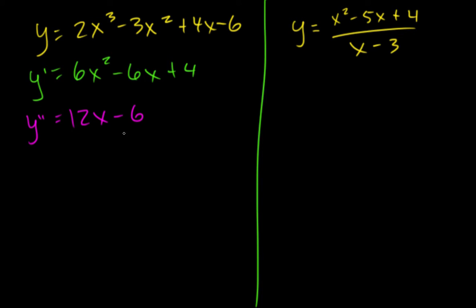If we want to, we can factor it. We don't really need to, though. We set this equal to 0. Add 6. 6 is equal to 12x. Divide by 12, and so 1 half equals x.